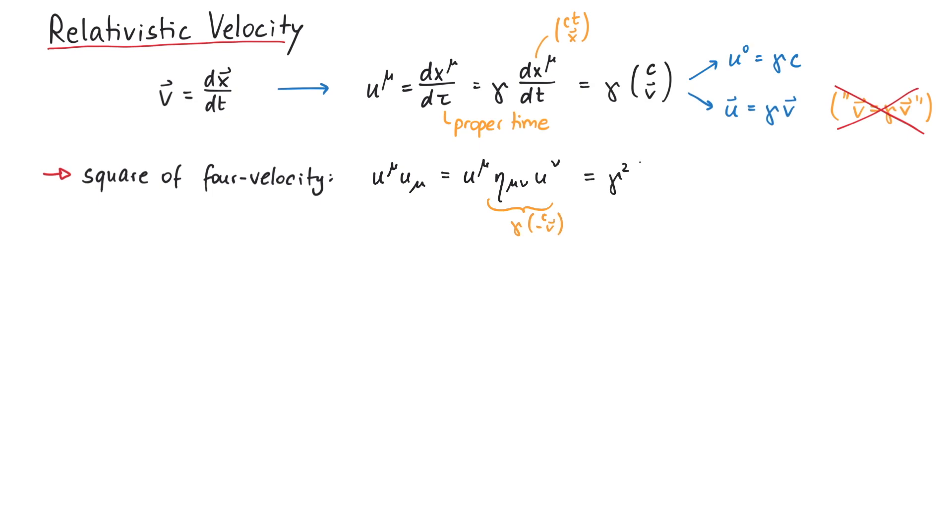So this yields gamma squared times c squared minus v squared. We can use the definition of gamma to write the expression like this, such that only c squared remains in the end.